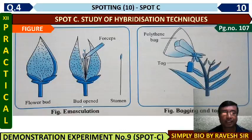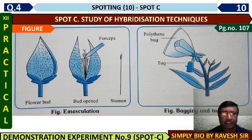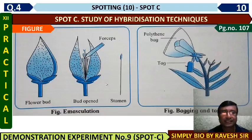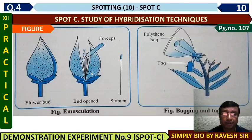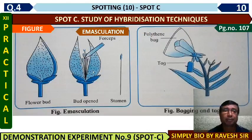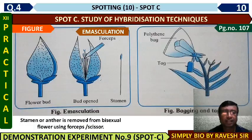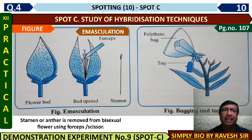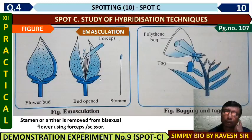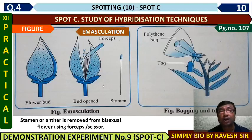The figure on the left shows emasculation. The flower bud is carefully opened with forceps or scissors, and the male part — the stamen — is removed. As soon as the male part of a bisexual flower is removed, that flower is now considered a female flower, and that plant becomes the female parent. This is called emasculation — 'e' means remove, 'mascula' means male part. This forcep and scissor method works for flowers that are big enough to be handled easily.